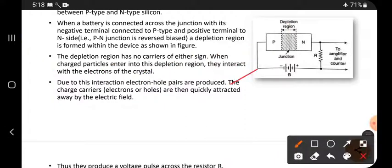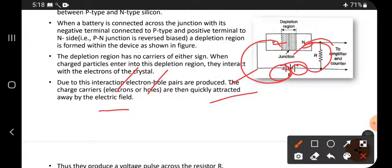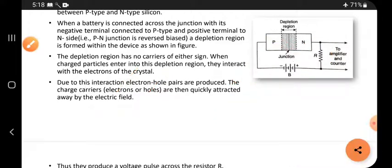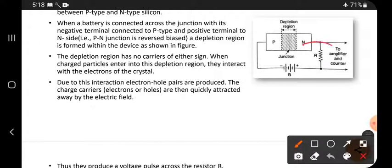The charge carriers, electrons or holes, are then quickly attracted away by the electric field. Electrons travel to the positive side because they're negative and attract with the positive charge. Holes travel to the negative side and attract with the negative battery. Electrons are attracted to the positive terminal and holes are attracted to the negative terminal.